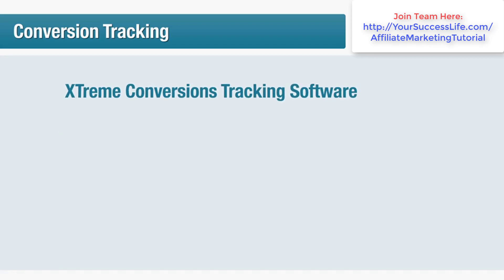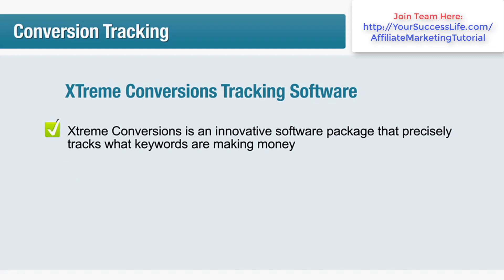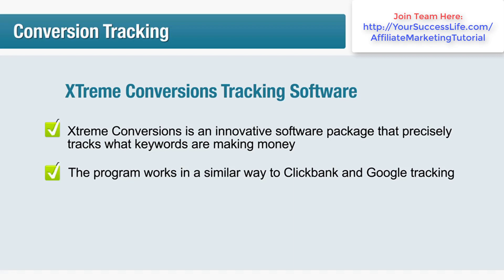Extreme Conversions is an innovative software package that precisely tracks which keywords are making money. It works in combination with Google, Yahoo, MSN and about a hundred affiliate networks including Clickbank, Commission Junction, Azoogle and Amazon. The program works similarly to Clickbank and Google tracking — you ask the product owner to insert some code into their thank you page. The advantage of Extreme Conversions is that it accurately shows you the most profitable keywords in any market within a couple of weeks of setup. It also ensures you don't spend more on pay-per-click than necessary, and improves your click-through rate, which in turn increases your quality score.